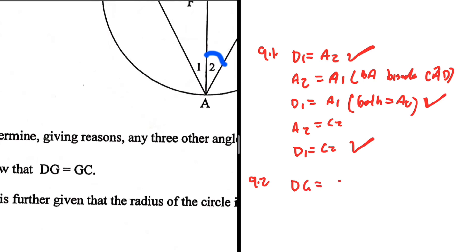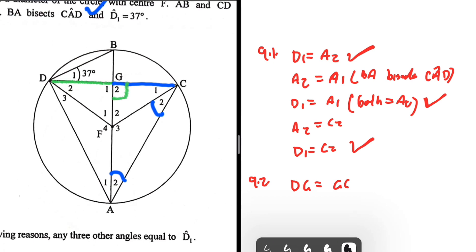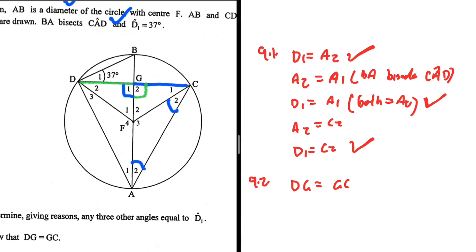Let's move to 9.2: show that DG equals GC. Let's highlight DG and GC. There are a couple of ways to prove that DG equals GC — we can prove the two triangles are congruent, or we can prove that G2 equals 90 degrees or G1 equals 90 degrees. If we do that, we would have proved that the radius bisects the chord, and if it bisects the chord, DG equals GC.